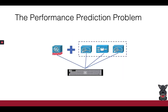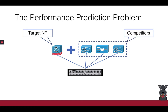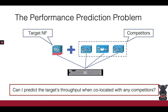Now let us look at Dwight's problem a little more formally. Dwight is given a set of NFs. One of these NFs is the target, or the NF whose throughput he cares about. The remaining NFs the target will be co-located with are competitors. The question then is simple: how can Dwight predict the expected throughput of his target NF for each co-location scenario, without actually having to deploy it?